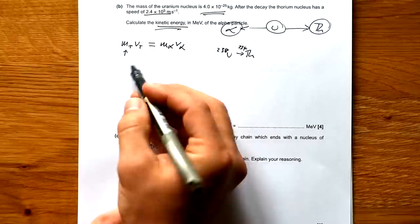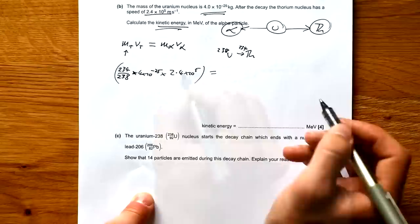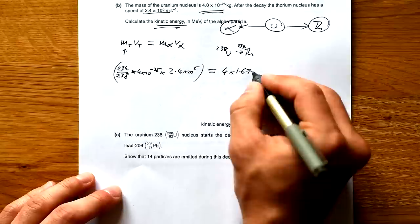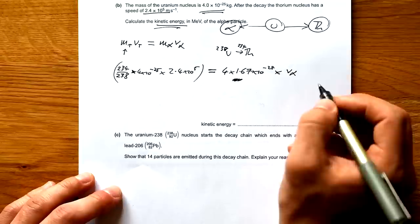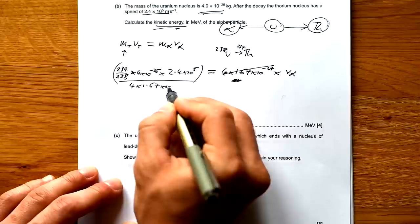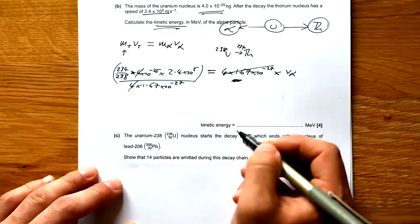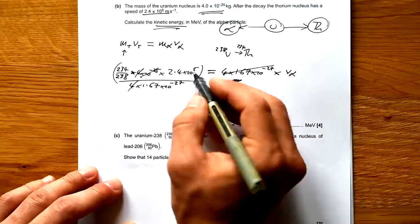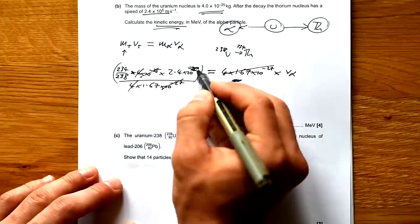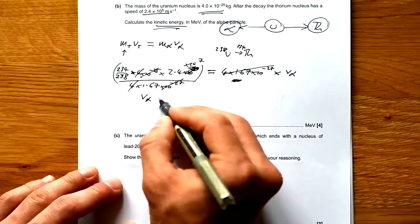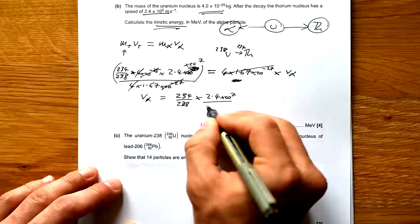So we can say that the mass of the thorium nucleus is 234 over 238 of that mass times the speed, equal to - and we know an alpha particle is four lots of protons and neutrons - so that's four times 1.67 to 3 sig figs times 10 to the minus 27 times its speed. So all we have to do is tidy this up. Fours are going to cancel. Let's tidy up powers of 10 as well. 10 to the minus 25 times 10 to the 5 is 10 to the minus 20. Then times 10 to the minus 27. Let's just put times 10 to the 7 on top here.